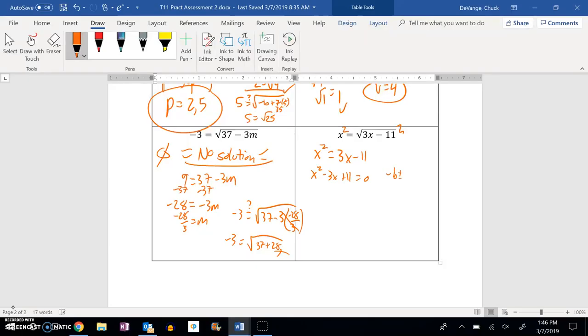Remember, quadratic formula is negative b plus or minus the square root b squared minus 4ac all over 2a.